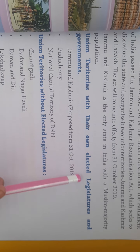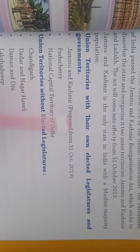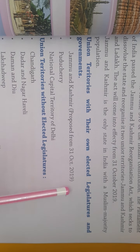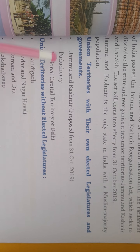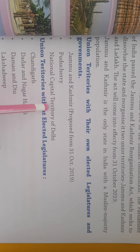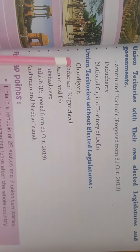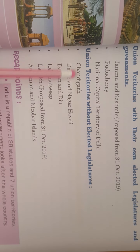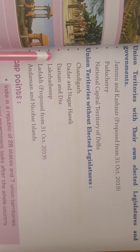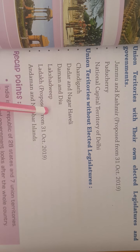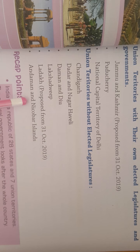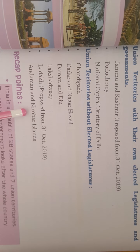Union Territories with their own elected legislatures and governments: Jammu and Kashmir (proposed from 31 October 2019), Puducherry, and the National Capital Territory of Delhi. Union Territories without elected legislatures: Chandigarh, Dadra and Nagar Haveli, Daman and Diu, Lakshadweep, Ladakh (proposed from 31 October 2019), and Andaman and Nicobar Islands.